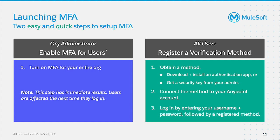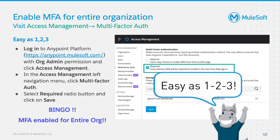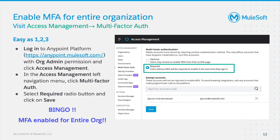Launching MFA is a two-step process. First, the Org Admin will turn on MFA for the entire organization. Once turned on, users will not be able to log into Anypoint platform until they configure MFA. Second, users will then have to obtain and set up at least one verification method. To enable MFA for the entire organization: log into Anypoint platform with Org Admin permissions and click Access Management. From the left navigation menu, click the multi-factor authentication link. Select the required radio button and click Save. MFA is now enabled. Next time a user logs in, they are prompted to configure a verification method if it's not already configured.